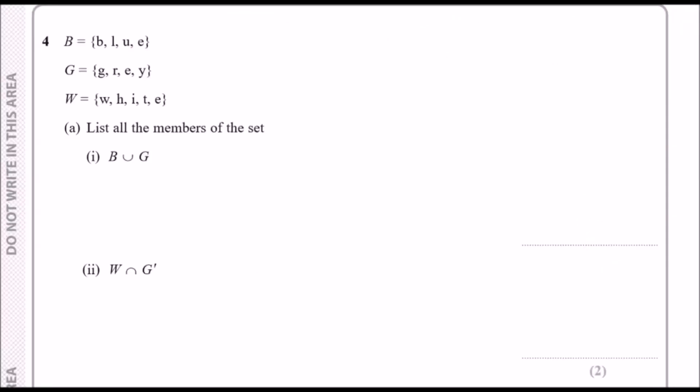For number 4 we're giving 3 different sets here. We've got B for blues using the letters b, l, u, e. G is grey: g, r, e, y. And W is white: w, h, i, t, e. This question wants us to list all the members of the set where B unites with G. This is a union sign and this little bridge n sign is an intersection.